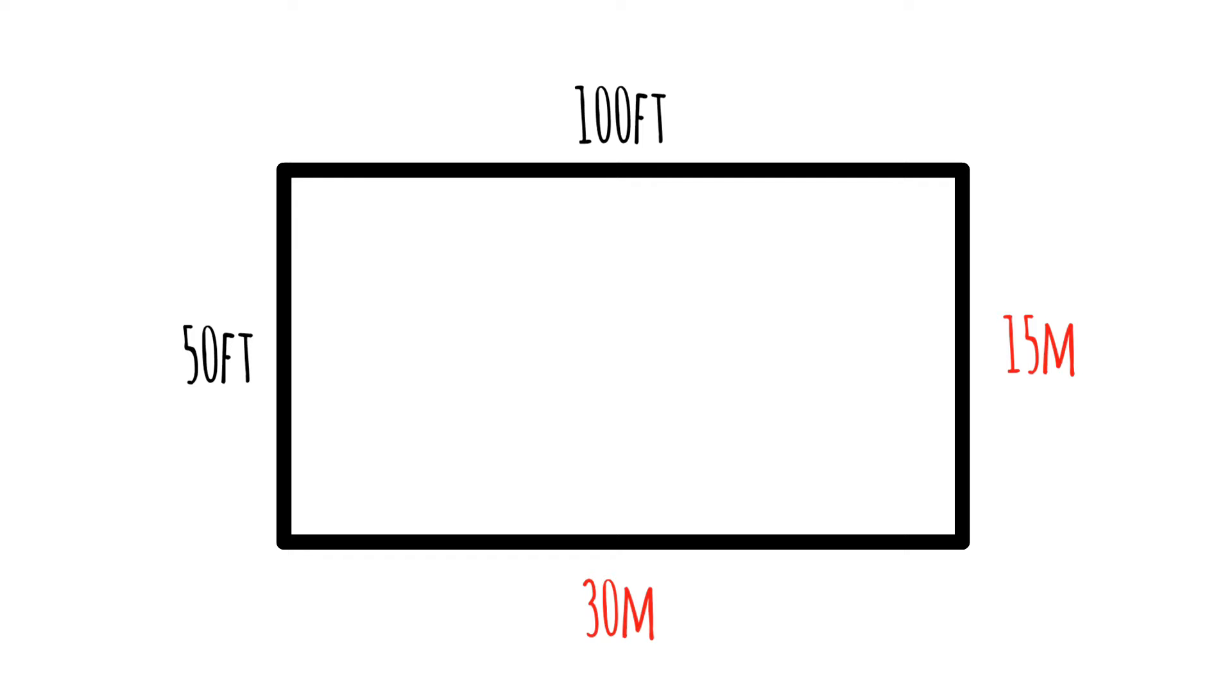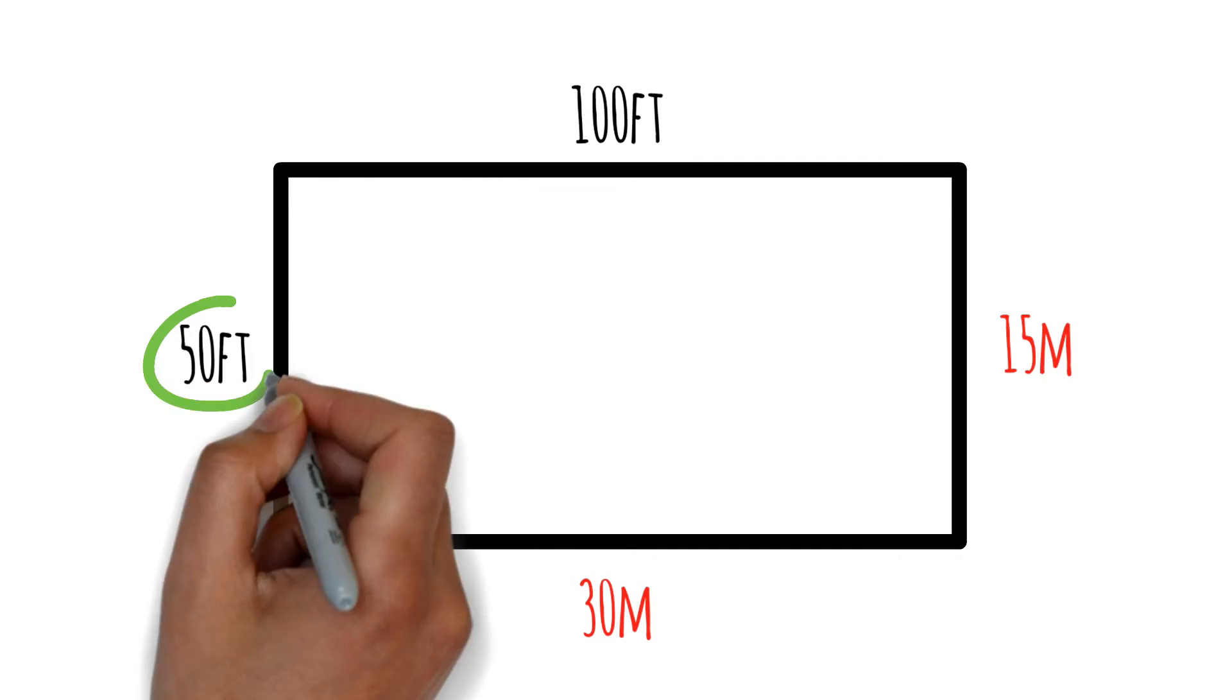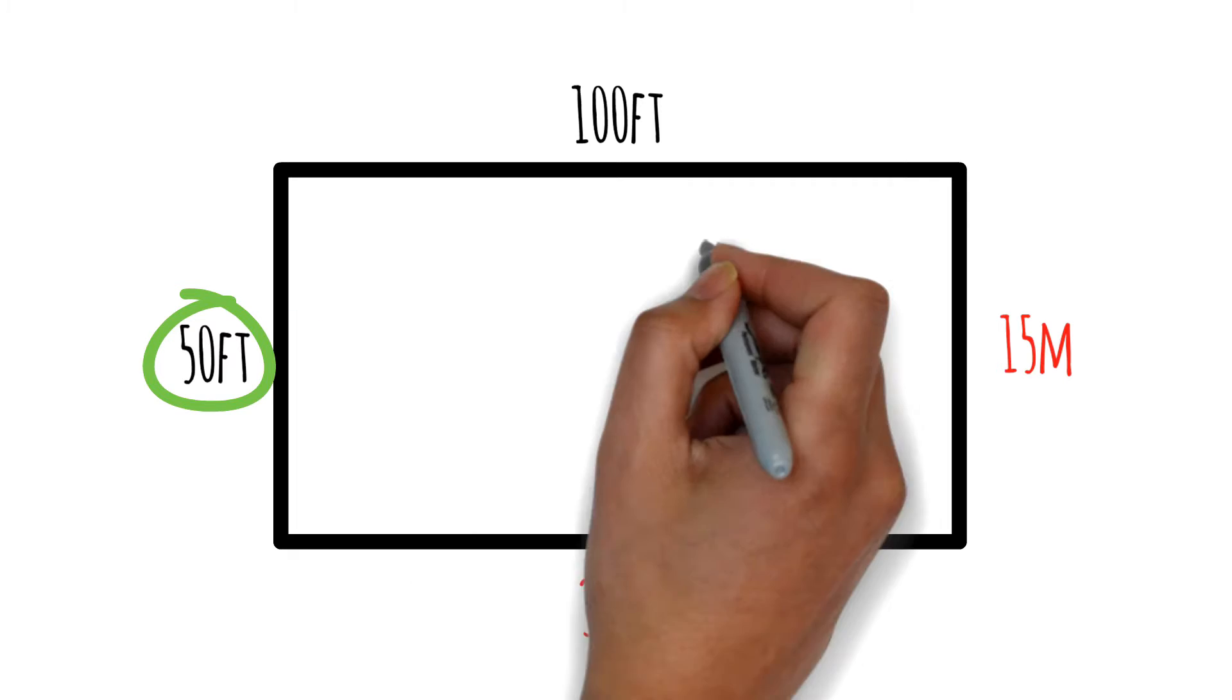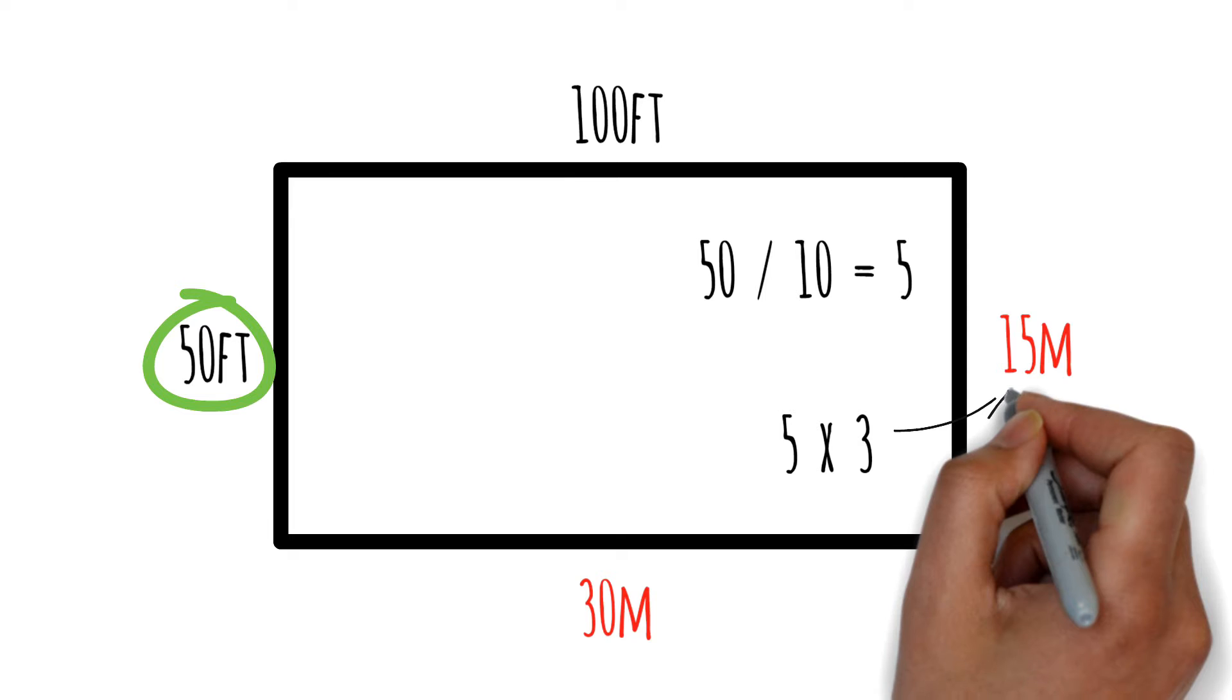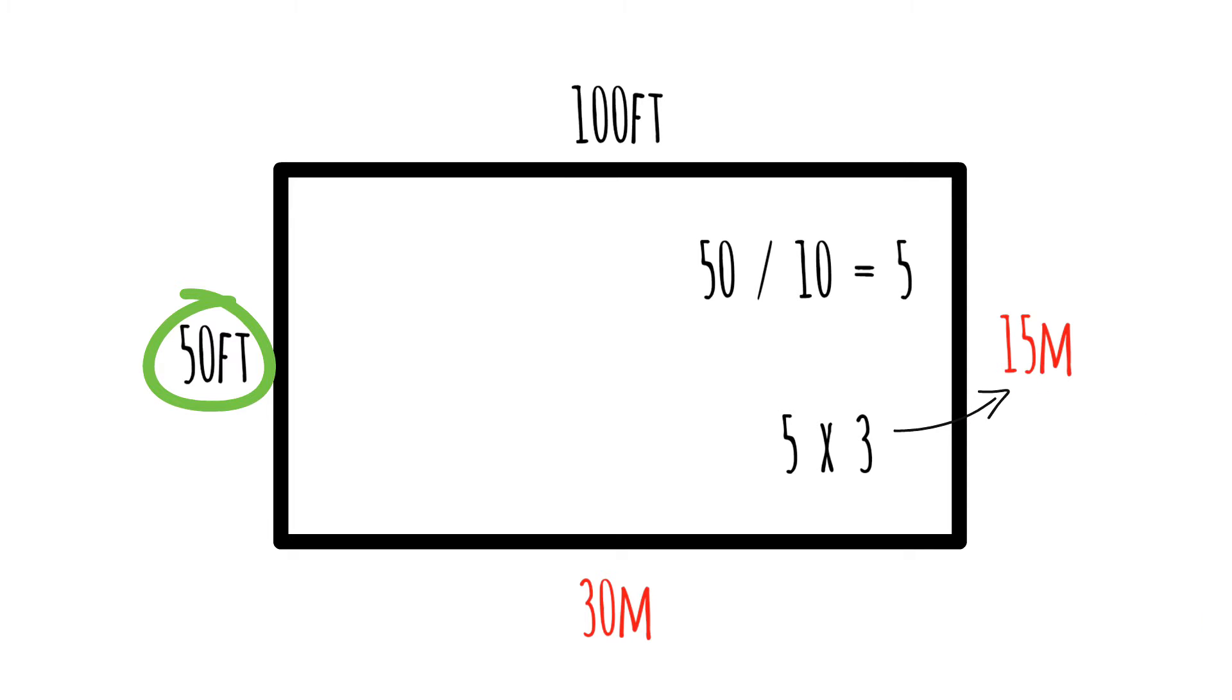Let's assume you have a 50 by 100 piece of plot. Now let's change it into meters. Let's start with the width of the plot, 50 feet. Divide 50 feet by 10 to get 5. Next, multiply 5 by 3 to get 15. So the width of the plot becomes 15 meters.